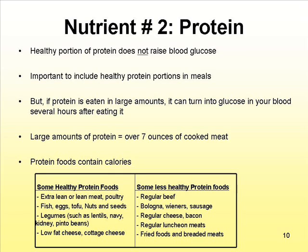Protein does contain calories, so you need to watch your portion size because too much protein will also lead to increased body weight. Some healthy protein foods include extra lean or lean meat, poultry, fish, eggs, tofu, nuts and seeds, legumes such as lentils, navy, kidney, and pinto beans, low-fat cheese, and low-fat cottage cheese.